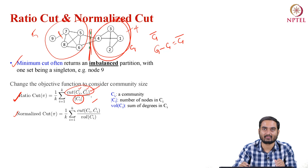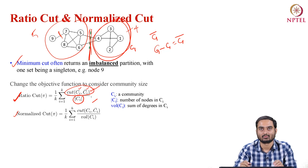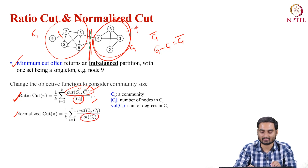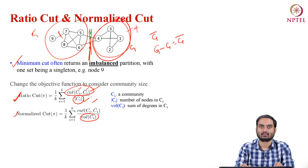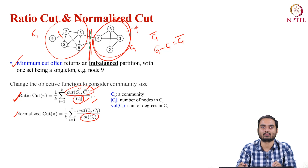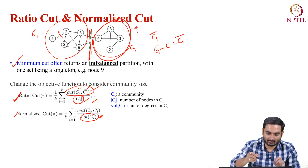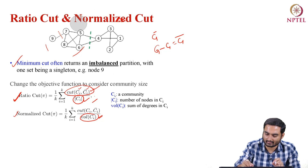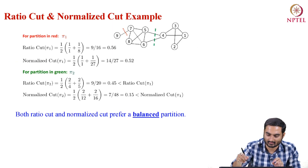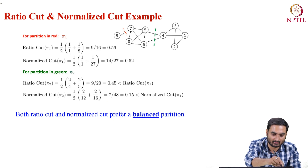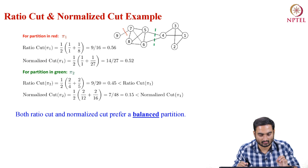There is another modified definition called normalized cut. Normalized cut is the same as ratio cut, with one difference: in the denominator, instead of the size of the community, we now have the volume of the community. The volume of a community is the sum of degrees of all nodes present in that community. So we normalize by the volume of the community.